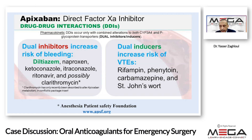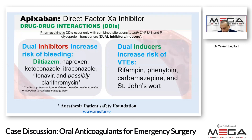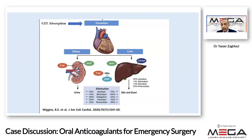Examples of drugs that increase apixaban plasma levels include diltiazem, non-steroidal NSAIDs like naproxen, antifungals like ketoconazole, and antivirals like ritonavir. Clarithromycin may also cause this problem. Other medications that induce cytochrome P450 3A4 will increase metabolism of apixaban, lowering plasma levels and reducing anticoagulation effect — examples include rifampicin, phenytoin, and carbamazepine. In short, drug interactions must always be kept in mind. After GI absorption, approximately 25% of apixaban is eliminated via urine and 75% via bile and stool.